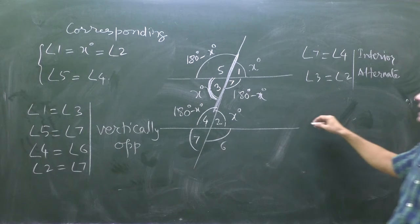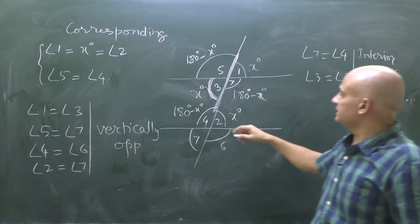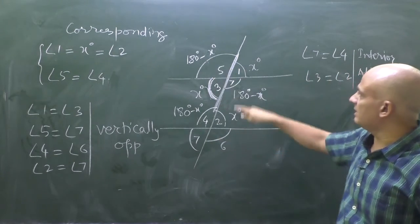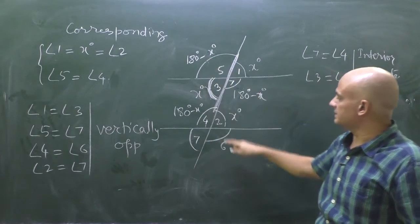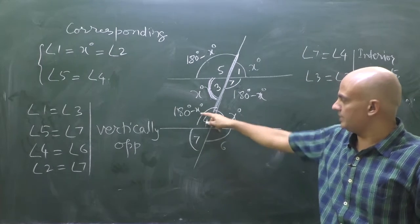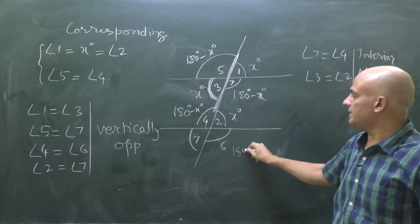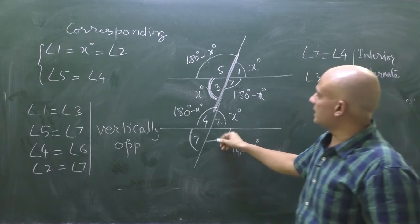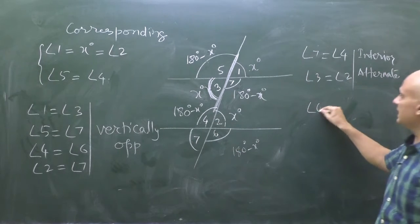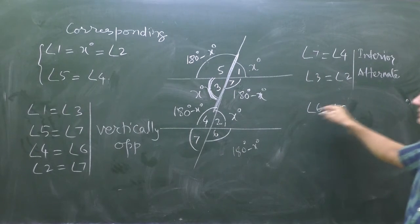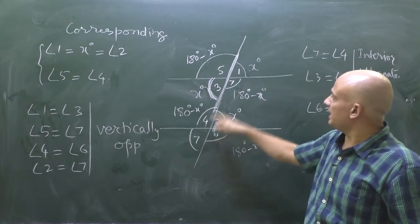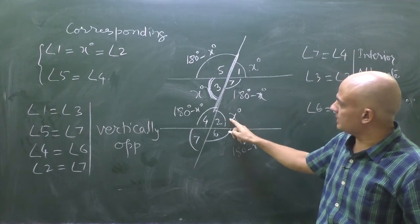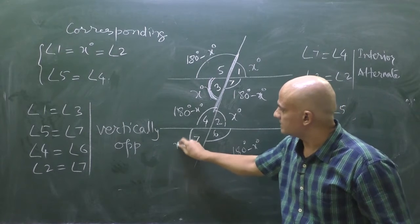The pairs — angles 3 and 2, and angles 4 and 7 — are called interior alternate angles. Angle 6 equals angle 5, both equal to 180 minus x degrees, as they are vertically opposite.